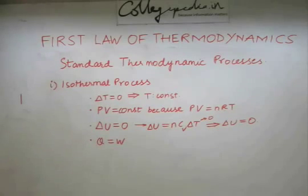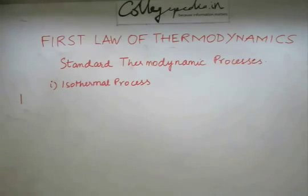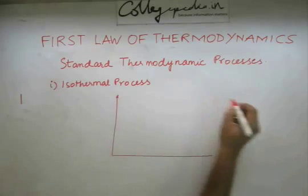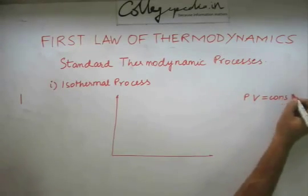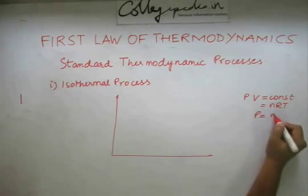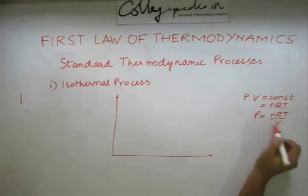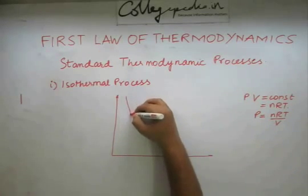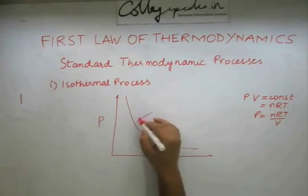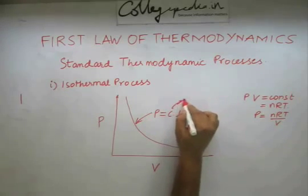Let us learn to represent the isothermal process on a graph. If we draw a PV diagram and we know that PV is a constant — this constant being nRT — we can represent P as a function of V. P and V are related inversely, giving us a typical hyperbola. So this process is a hyperbola on the PV graph.